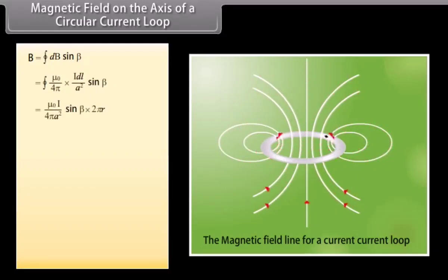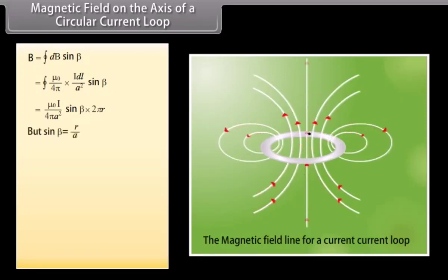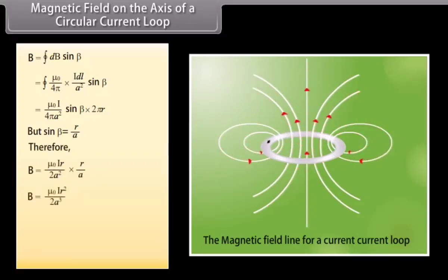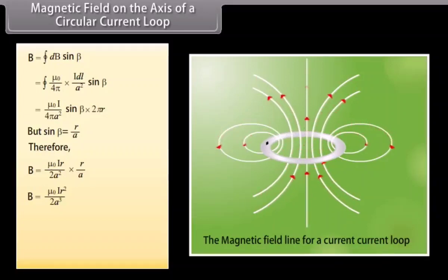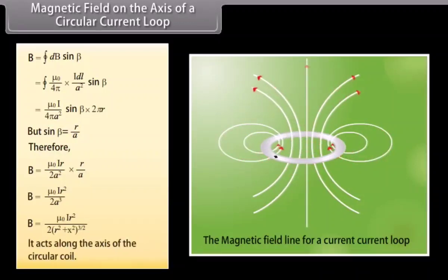By putting the values in this equation, the total magnetic field at P is equal to (μ₀i / 4πa²) · sinβ · 2πr. Since sinβ = r / a, the total magnetic field at P equals μ₀ir² / 2a³, which can also be written as μ₀ir² / 2(r² + x²)^(3/2). This magnetic field acts along the axis of the circular coil.